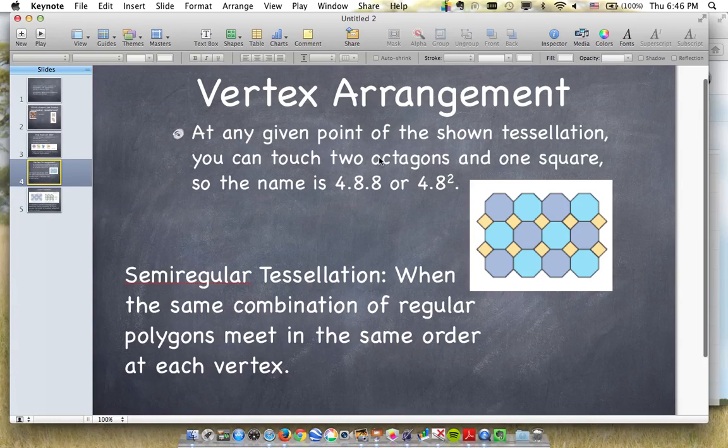When we name that, we call it by its vertex arrangement. So think of the number of angles that are in the polygon and how many are touching at that one vertex. So at one vertex, I have two octagons and one square. So you can call it 4.8.8 or 4.8 squared. And again, this is an example of a semi-regular tessellation. It's the same combination of regular polygons meeting in the same order at each vertex.